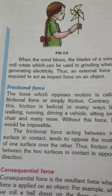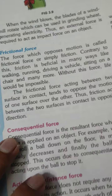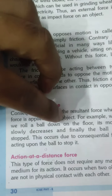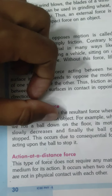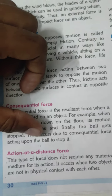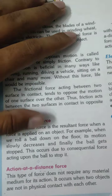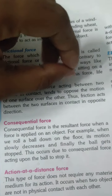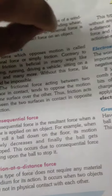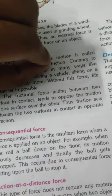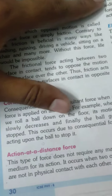Our second topic is consequential force. This force is the resulting force when a force is applied on an object. For example, when you roll a ball down on the floor, its motion slowly decreases and finally the ball stops. This occurs due to the consequential force acting upon the ball. After all the calculation of forces, the result is called consequential force.